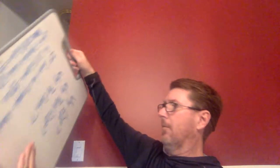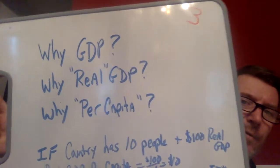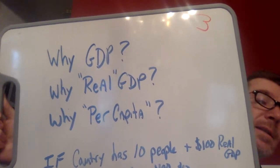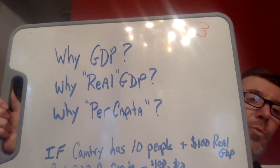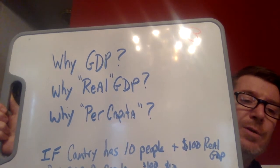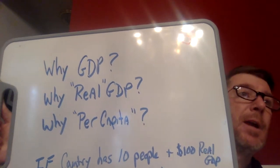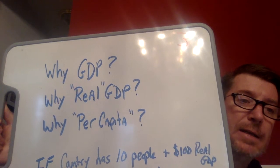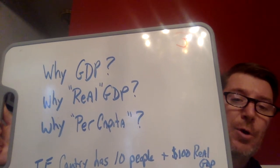Real GDP per capita: GDP is a measure of all the stuff we can make, measured either by spending — using the SIGX method — or by income using the RIP method: wages, rents, interests, and profits. We use real GDP because we don't want inflation to produce crazy numbers like Venezuela's, making it look like our country is producing far more stuff than it really is.